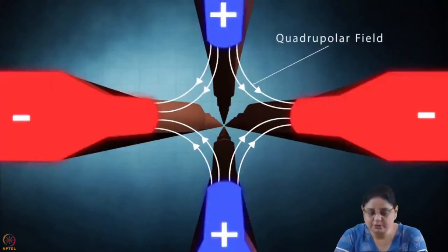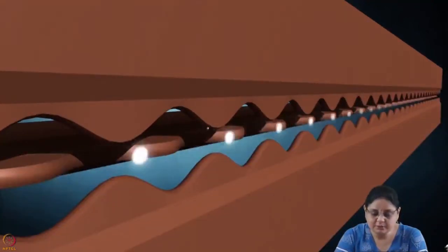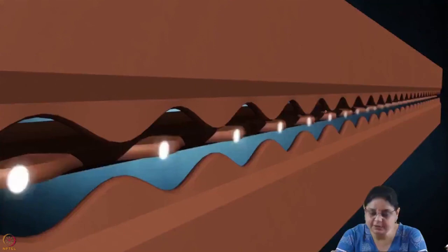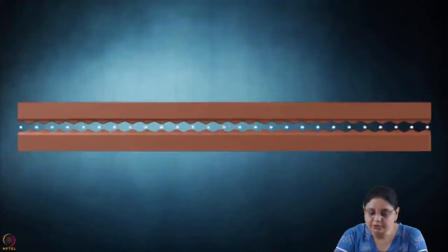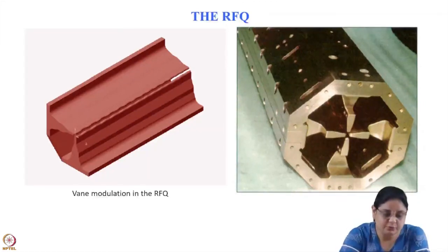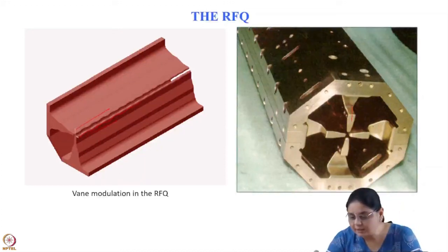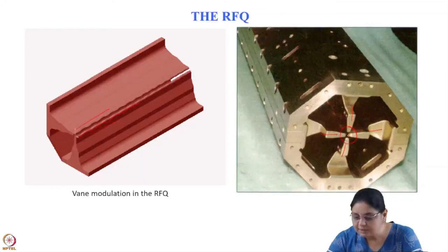This is the RFQ — showing the quadrupolar field due to the four vanes, and you can see the modulation which produces an electric field in the Z direction due to which the beam gets accelerated. This is showing one-fourth of the RFQ — these are two vanes and here you can see the modulations on the vanes. Another picture shows all four vanes 1, 2, 3, and 4. This is the region in which the beam gets accelerated.